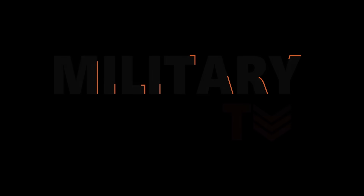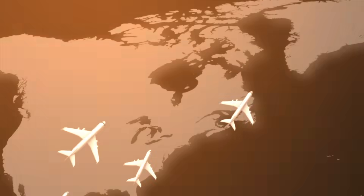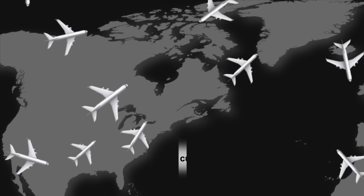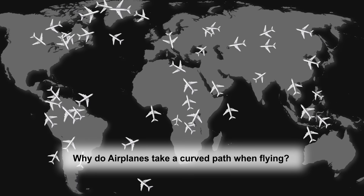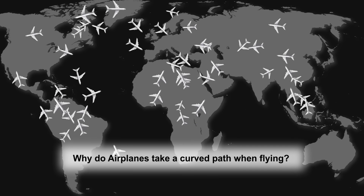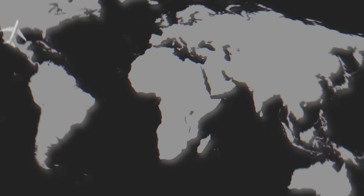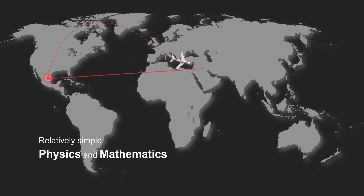Hello everyone, welcome back to another episode of Military TV. In today's session, we are going to discuss why airplanes take a curved path when flying. So sit back and keep watching this video till the end. Surprisingly, the reasons behind the phenomenon of the curved path are relatively simple physics and mathematics.